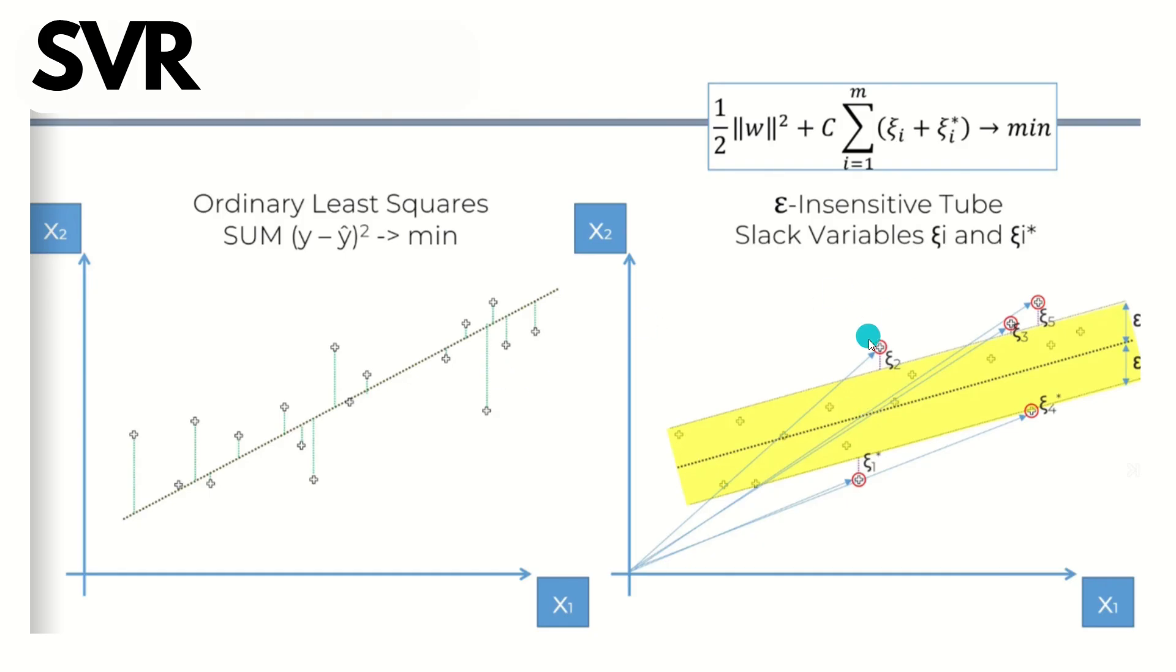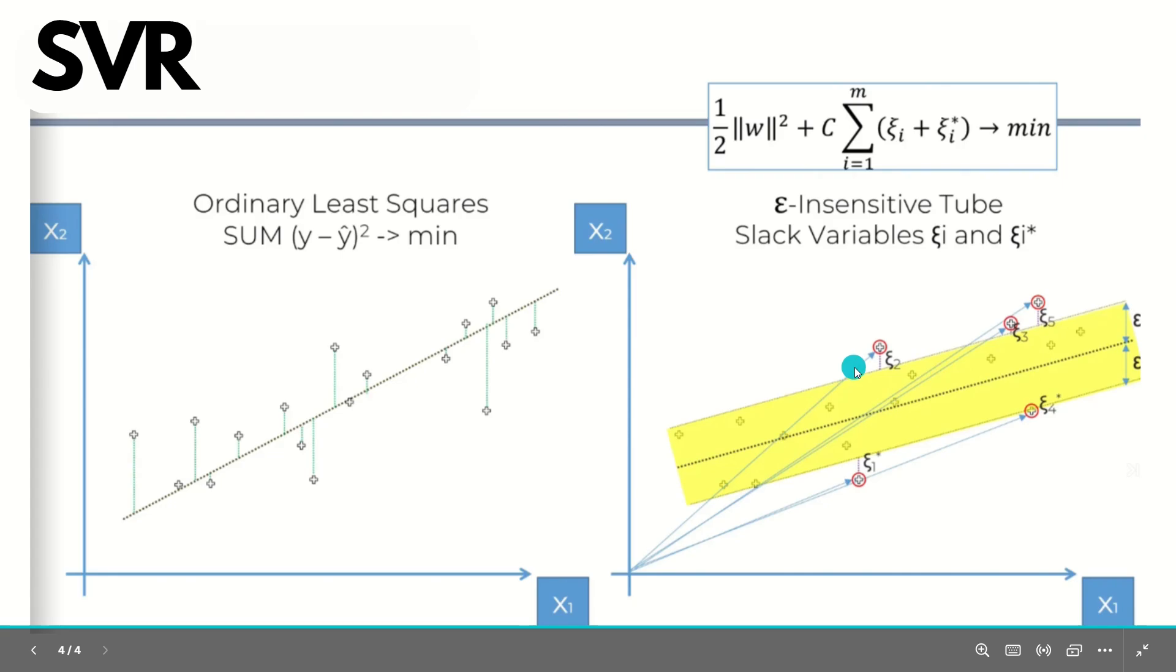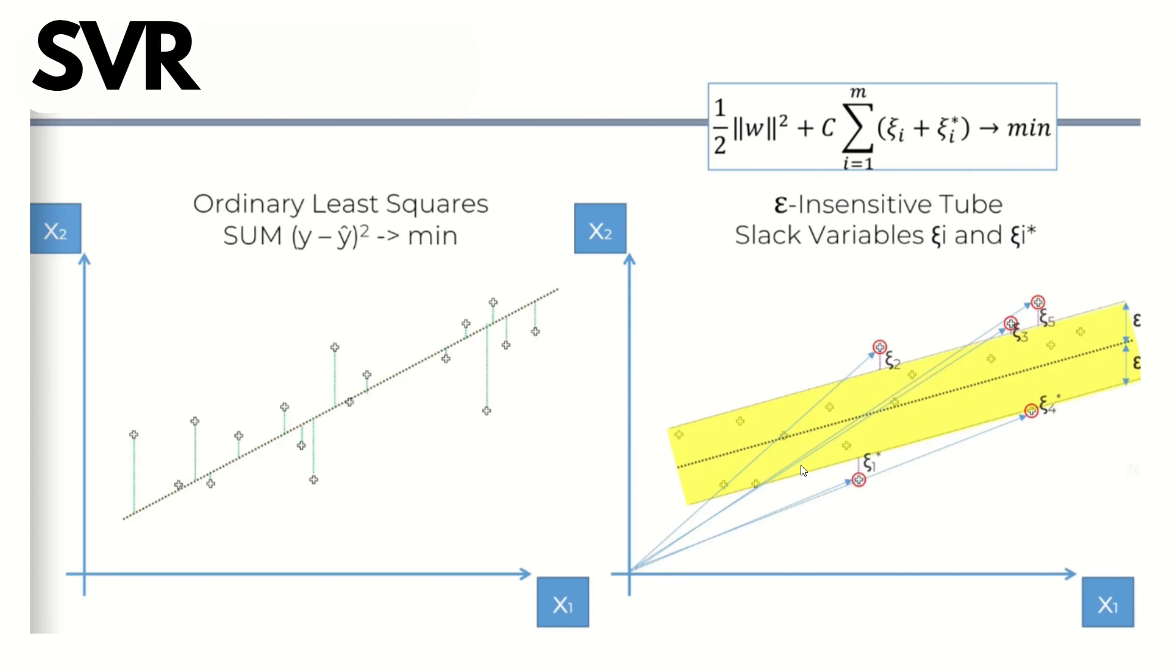Moving further, you can see these points which are outside of this tube are highlighted in red markers, and we have assigned some symbols here: ξ_i, ξ_i*. These are called slack variables. We also have mapped some lines to it, you can see the blue lines. We may be wondering why it's called support vector regression. Actually, all of these points can be represented as vectors in this two-dimensional space or multi-dimensional space if we have more features.